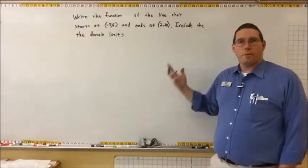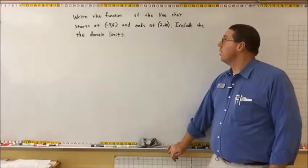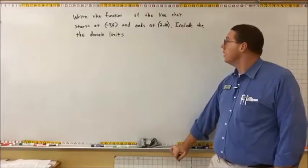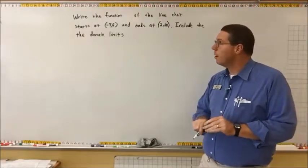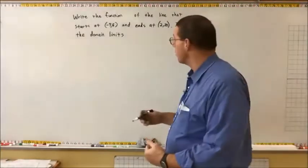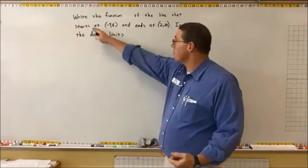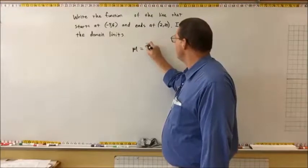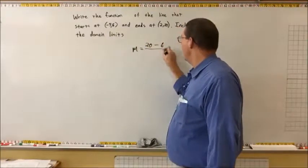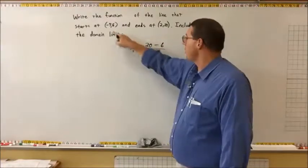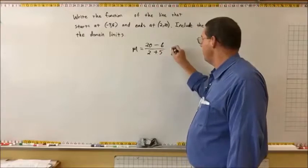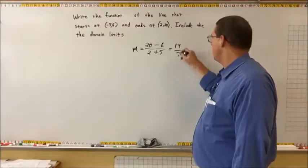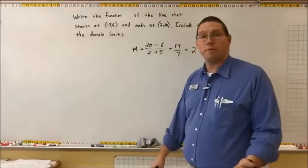Let's try another one. Write the function of the line that starts at (negative 5, 6) and ends at (2, 20), include the domain limits. We need the slope: m equals y2 minus y1 over x2 minus x1, so 20 minus 6 over 2 minus negative 5, which is 14 over 7, equals 2. So the slope is 2. Using point-slope form with point (2, 20): y minus 20 equals 2 times (x minus 2). Distributing: y minus 20 equals 2x minus 4. Adding 20 to both sides: y equals 2x plus 16. So the function is f(x) equals 2x plus 16.